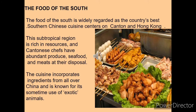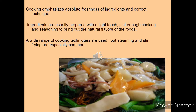Now we'll talk about the food of southern China. The food of south is widely regarded as the country's best — it centers on the Canton and Hong Kong region. Southern Chinese food is actually sour, which is why you will find soups from this region like hot and sour soup. This cuisine incorporates ingredients from all over China and is known for its sometimes use of exotic animals. The cooking emphasizes absolute freshness of ingredients and correct technique. Ingredients are usually prepared with a light touch, just enough cooking and seasoning to bring out the natural flavor. Steaming and stir-frying are especially common cooking methods.